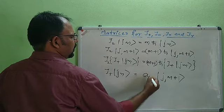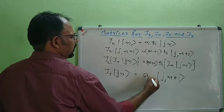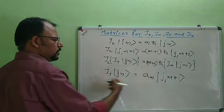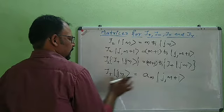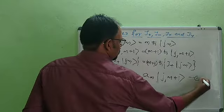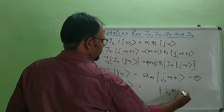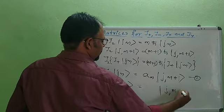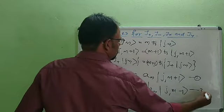These two are equivalent; at most they can differ by a multiplying factor, which I am writing as Am. So J+|J,m⟩ = Am|J,m+1⟩ — this is equation 1. Similarly, J-|J,m⟩ = Bm|J,m-1⟩ — this is equation 2.